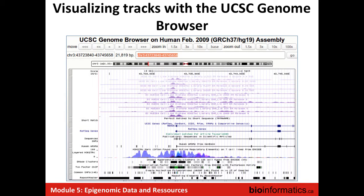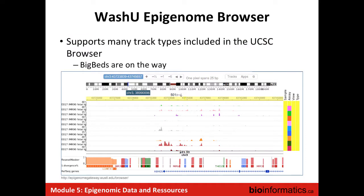In the practical, we're going to be using the UCSC genome browser, but there are other nice browsers for epigenomic data. The WashU epigenome browser is one that's really built on UCSC but has a lot of components specifically for looking at epigenomic data — though that's not something we'll look at too much.